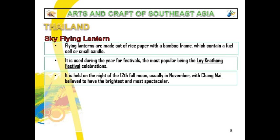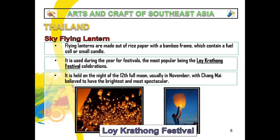Since it is based on the 12th moon, it doesn't have a fixed or same date year after year. They usually do it near the river and sea — just to make sure to prevent accidents, because sky flying lanterns are a fire hazard that can burn houses or cause short circuits in electric cable lines.